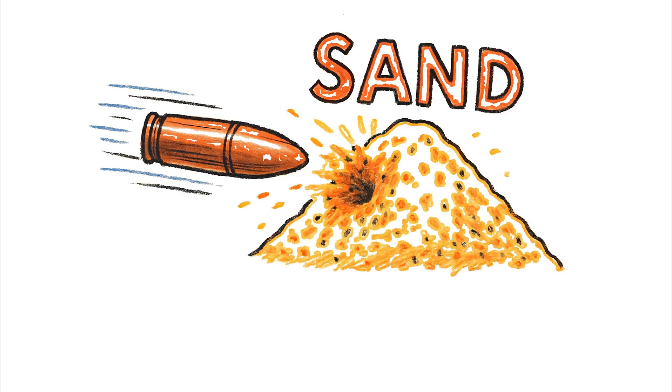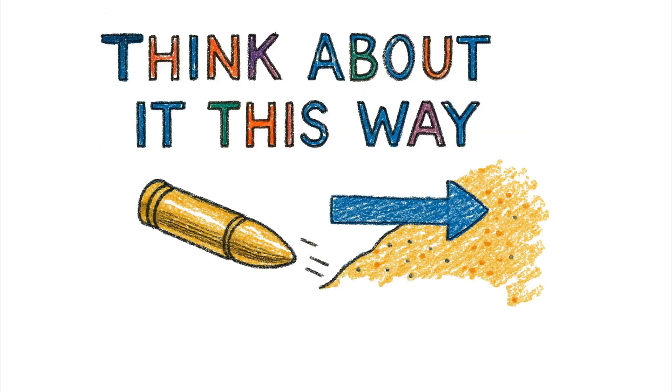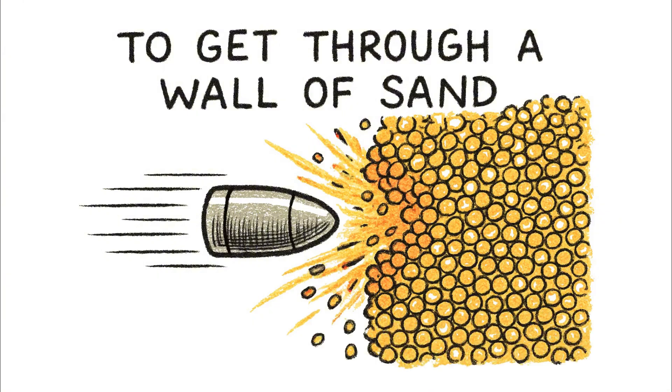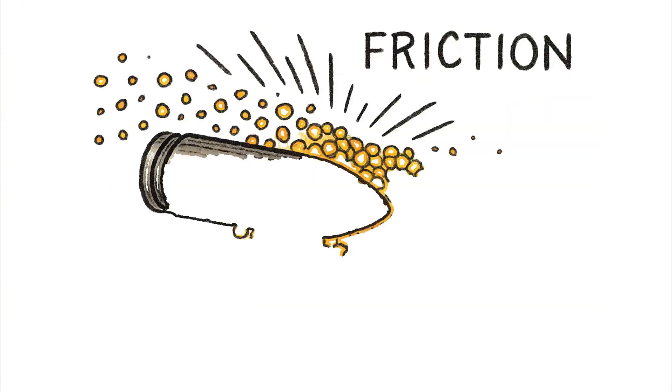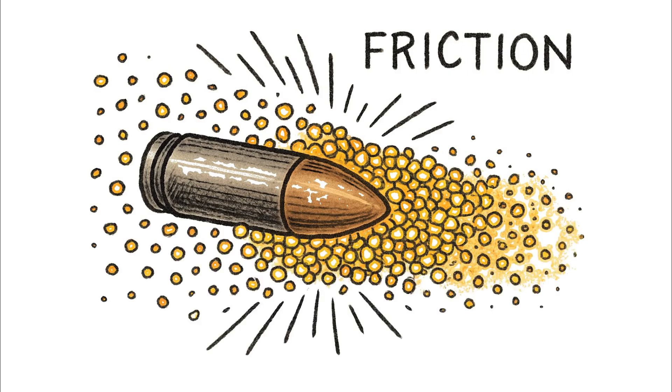It doesn't fight back with rigidity, but instead yields, absorbs, and swallows the bullet whole. Think about it this way, to get through a wall of sand, a bullet can't just punch one neat hole. It has to physically push millions of tiny grains of sand out of its way, and every grain it touches steals its energy through friction and impact.